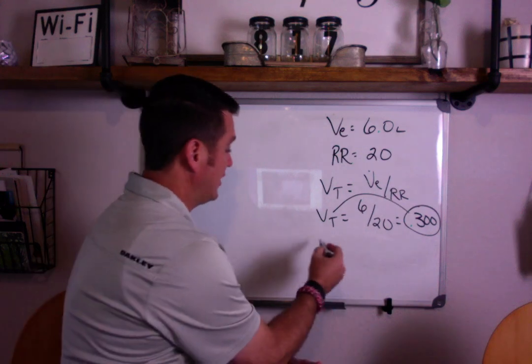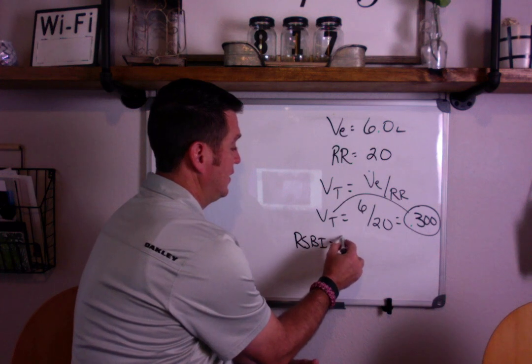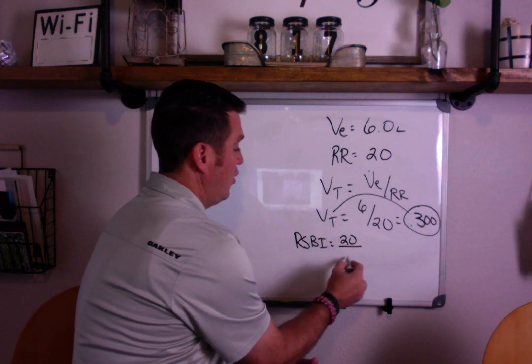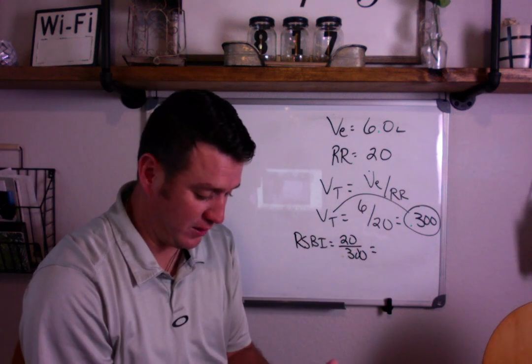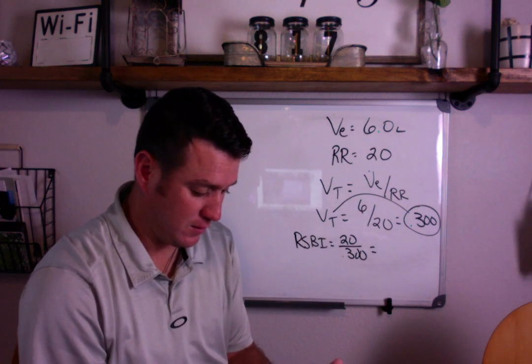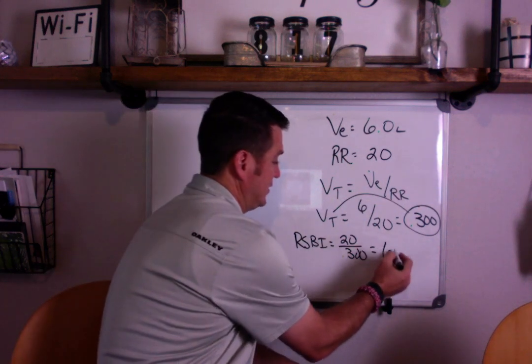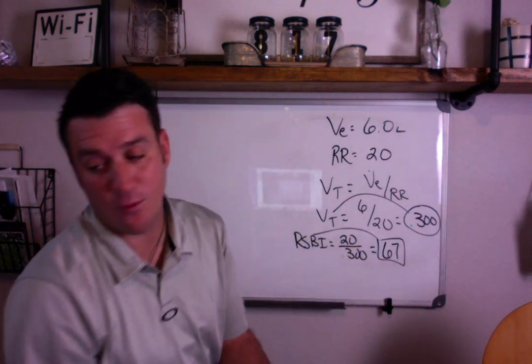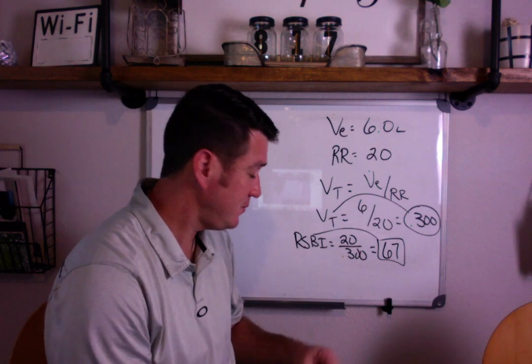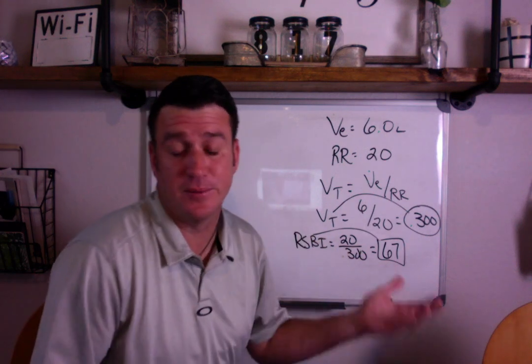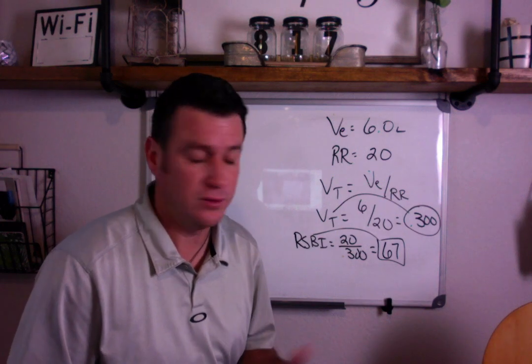So, let's finish it out. Our RSVI formula is rate over tidal volume in liters. So, it's 20 divided by 0.3. And that comes out to 67 is our RSVI. 105 is our mark there that you want to be below. And so, this patient looks like, at least from this part of the example, that at least from that indicator, they would be acceptable and ready to extubate.